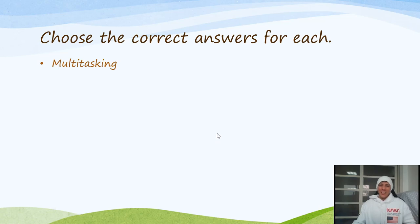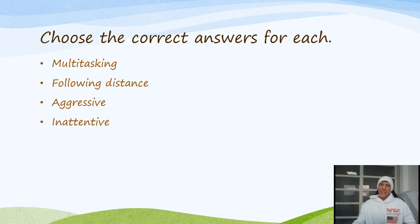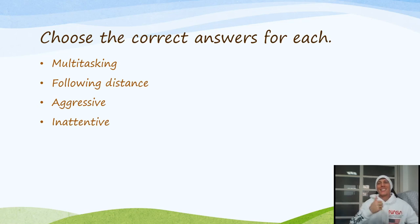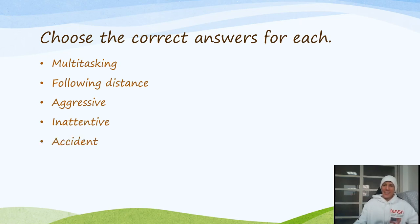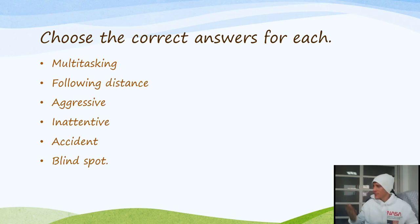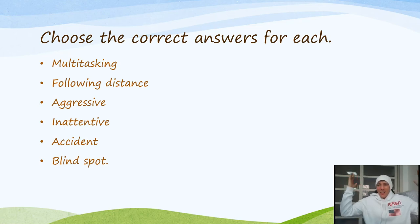Here are the answers. Number one is multitasking. The safe following distance uses the three-second rule. Tailgating is aggressive — wanting to fight. Not paying attention is 'inattentive' — the prefix 'in-' makes it negative, so attentive is good, inattentive is bad. Similarly, appropriate is good, inappropriate is bad. 'Collision' and 'crash' both refer to accidents. And a part of the road you can't see is called a blind spot — it's close to you but outside your line of sight, so you can't see it.